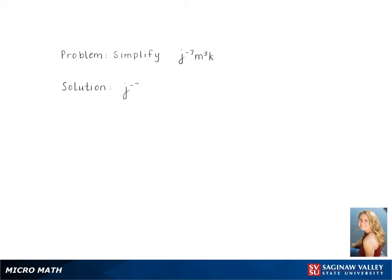To simplify j to the negative 7th, m to the 3rd, times k, we first use the formula below and move the negative exponent to the bottom.